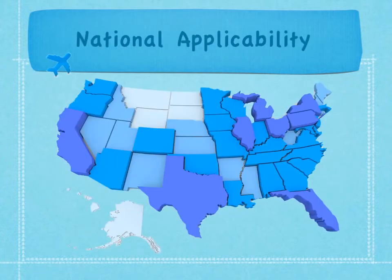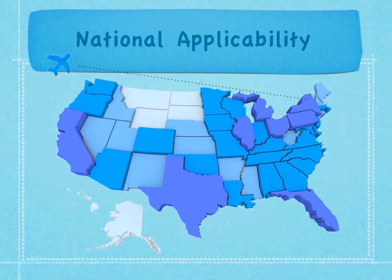Geographic distance is not a barrier to kidney paired donation. Often, the transplant chains generated through kidney paired donation involve donors and recipients across the United States. Research has shown that shipping a living donor kidney across the United States does not have a negative impact on the function of these kidneys. This enables kidney paired donation to be a national process, which greatly improves the ability to find matches for incompatible donor and recipient pairs.